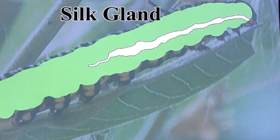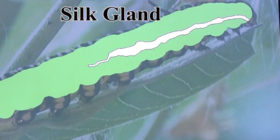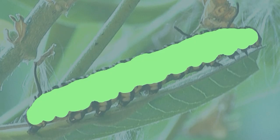Unique to the Lepidoptera — the butterflies and moths — is this special gland in the caterpillar: the silk gland. It produces silk strands and makes a mat that the larval stage can attach to and metamorphose into the pupa stage.